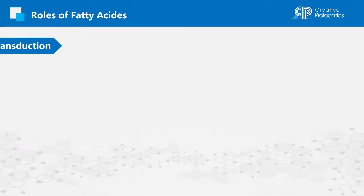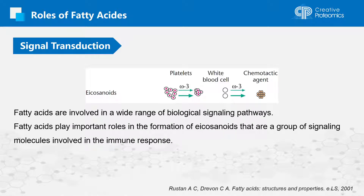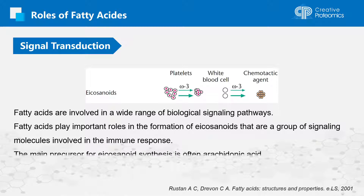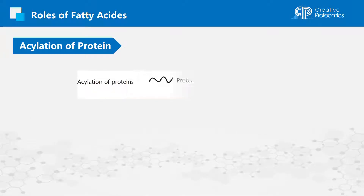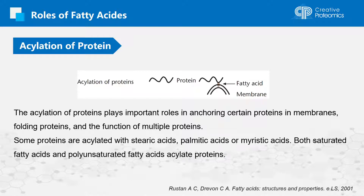Fatty acids are involved in a wide range of biological signaling pathways. They play important roles in the formation of eicosanoids, which are a group of signaling molecules involved in the immune response. The main precursor for eicosanoid synthesis is often arachidonic acid. The acylation of proteins plays important roles in anchoring certain proteins in membranes, folding proteins, and the function of multiple proteins. Some proteins are acylated with stearic acids, palmitic acids, or myristic acids.